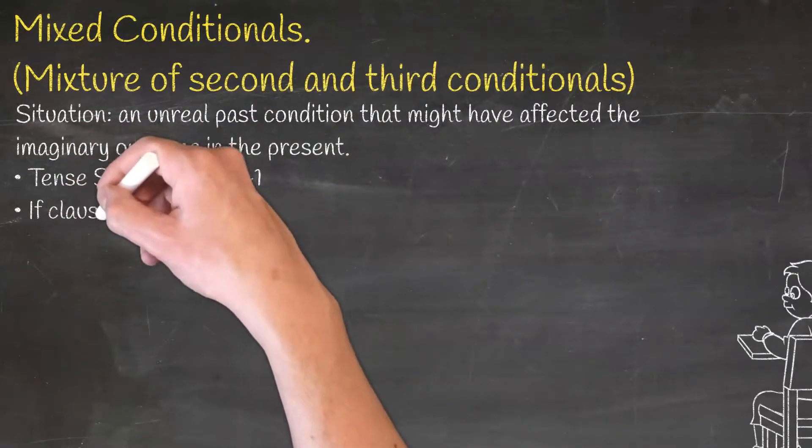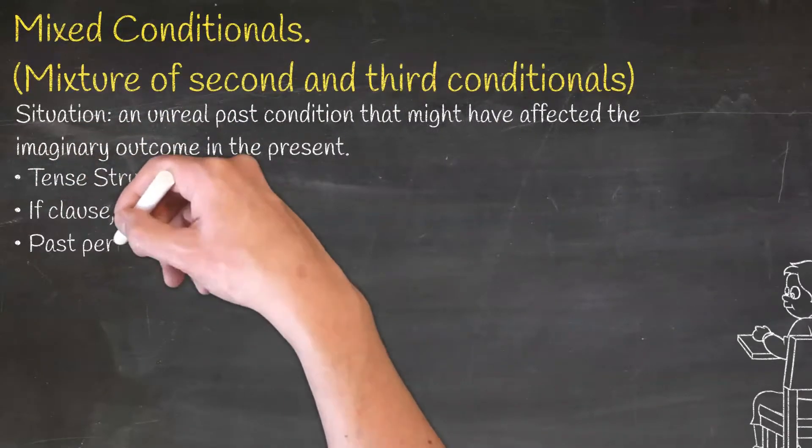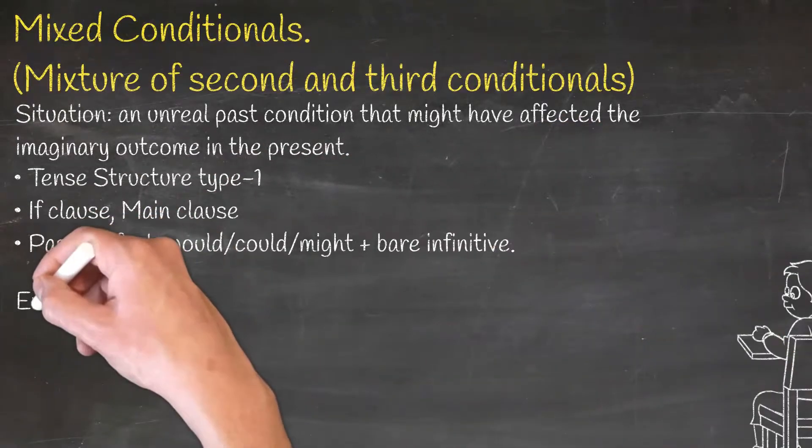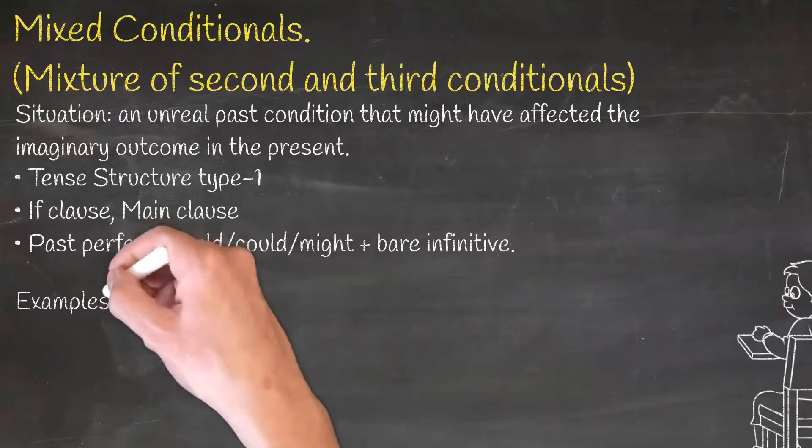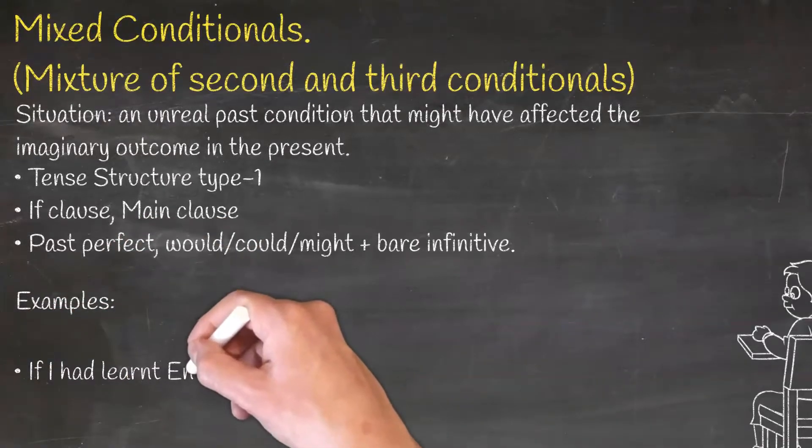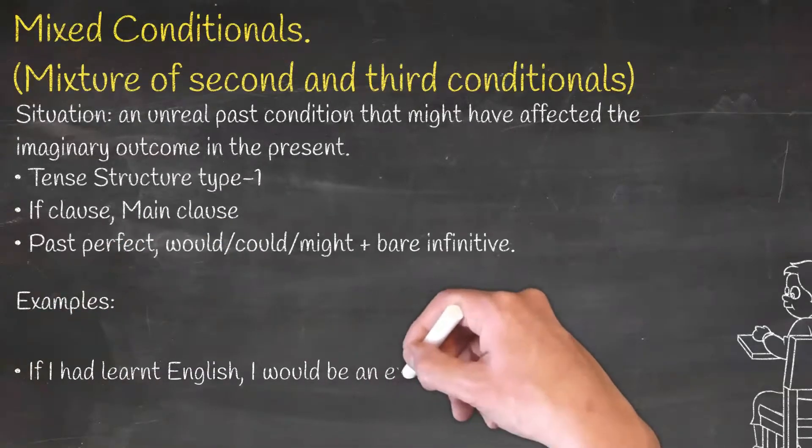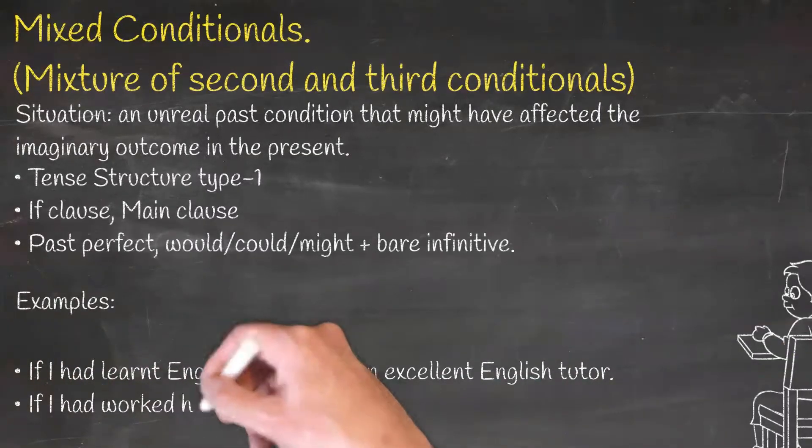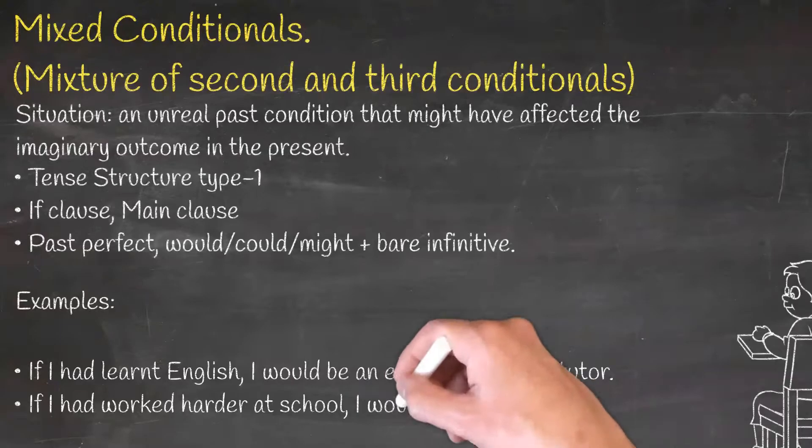There are two ways of constructing mixed conditional sentences. The first one is type 1, which includes if clause of the third conditional and main clause of second conditional. Examples: If I had learned English, I would be an excellent English tutor.